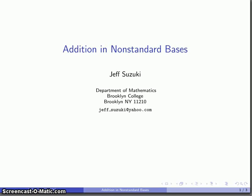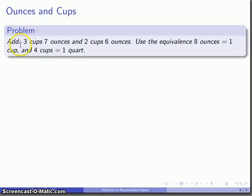All right, so let's take a look at addition in non-standard bases. For example, let's add 3 cups 7 ounces to 2 cups 6 ounces. And for this, we'll use the following equivalences: 8 ounces is 1 cup, 4 cups make up 1 quart.